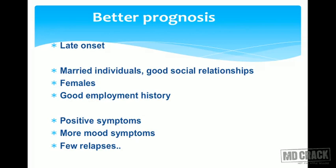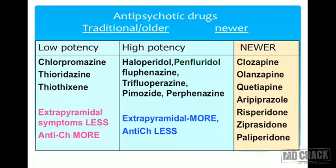Better prognosis in schizophrenia is associated with late onset, being married, good social relationships, female sex, good employment history, more positive and mood symptoms, and fewer relapses.